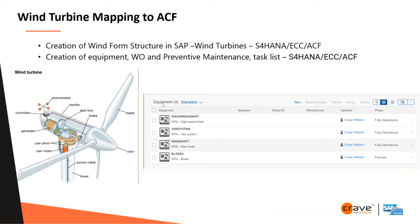We mapped all the wind turbine equipment. A wind turbine has different equipment components, so we mapped whatever equipment you see on the left-hand side to SAP S/4HANA. We transferred the data to IAM: high-speed shaft, yard system, main shaft, blades — these are the systems we are taking into consideration for different scenarios and IAM models.